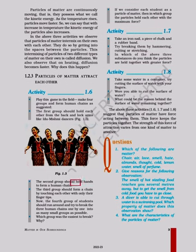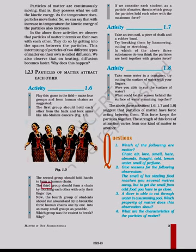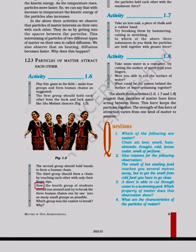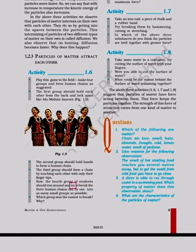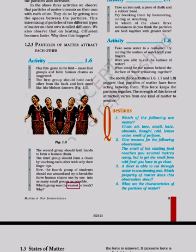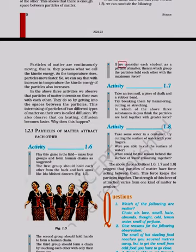The second group should hold hands to form a human chain. The third group should form a chain by touching each other with only their fingertips. Now, the fourth group of students should run around and try to break the three human chains one by one into as many small groups as possible. Which group was the easiest to break? If we consider each student as a particle of matter, then in which group did the particles hold each other with the maximum force?